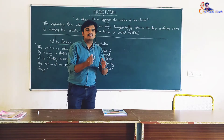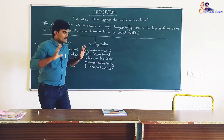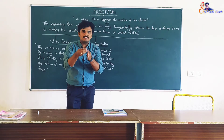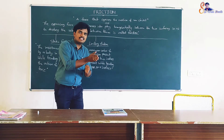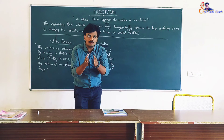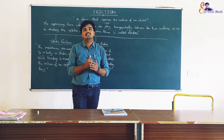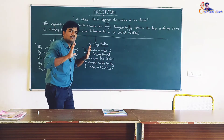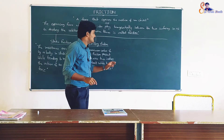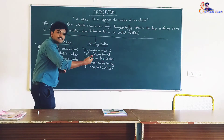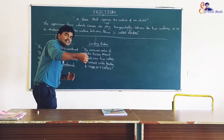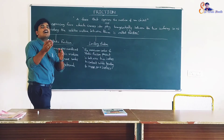So here you can see the difference between static friction and limiting friction. When you push the bus and apply 90 Newton force, the resistance is static friction. When 100 Newton force is applied and the bus starts, the limit is crossed — that friction at the point of motion starting is called limiting friction. So limiting friction is the maximum value of static friction.